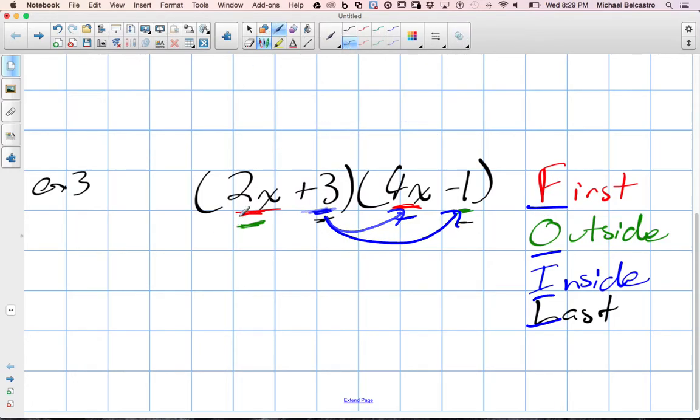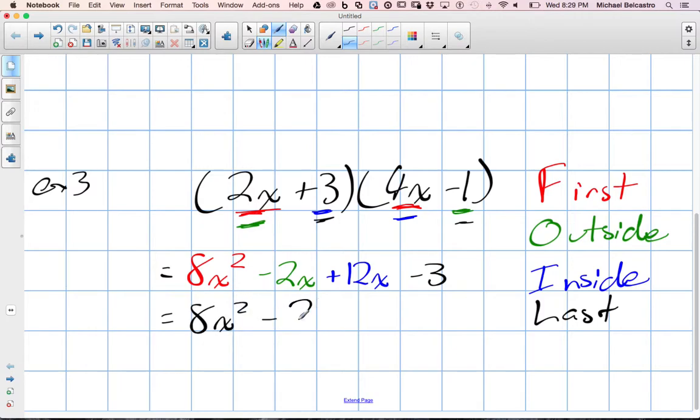So I'm going to quickly do that. 2x times 4x. That gives us 8x squared. I'll try to do them by color. Outside terms. 2x times negative 1 gives me negative 2x. Inside term, 3 times 4x is positive 12x. And then the last terms. Positive 3 times negative 1 is negative 3. So I've got a whole bunch of lovely colors here. I'm going to write it all in black so it looks a little easier for us to look at.